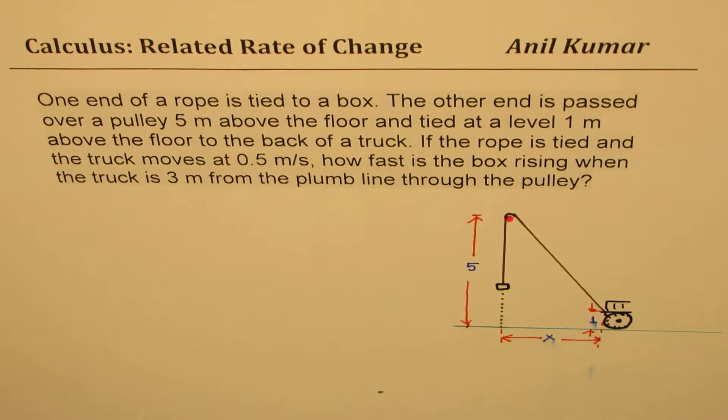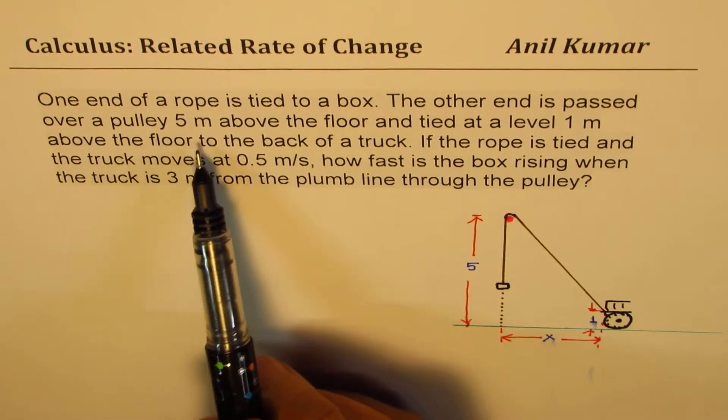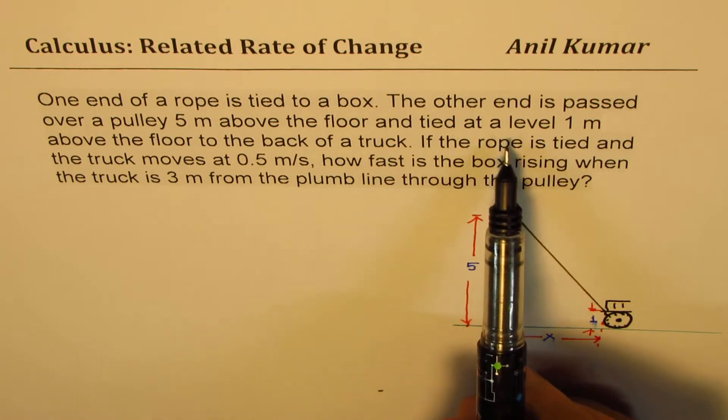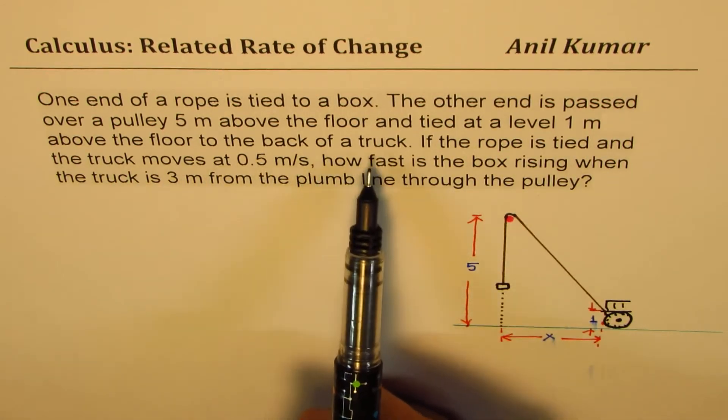One end of a rope is tied to a box, the other end is passed over a pulley 5 meters above the floor and tied at a level 1 meter above the floor to the back of a truck.